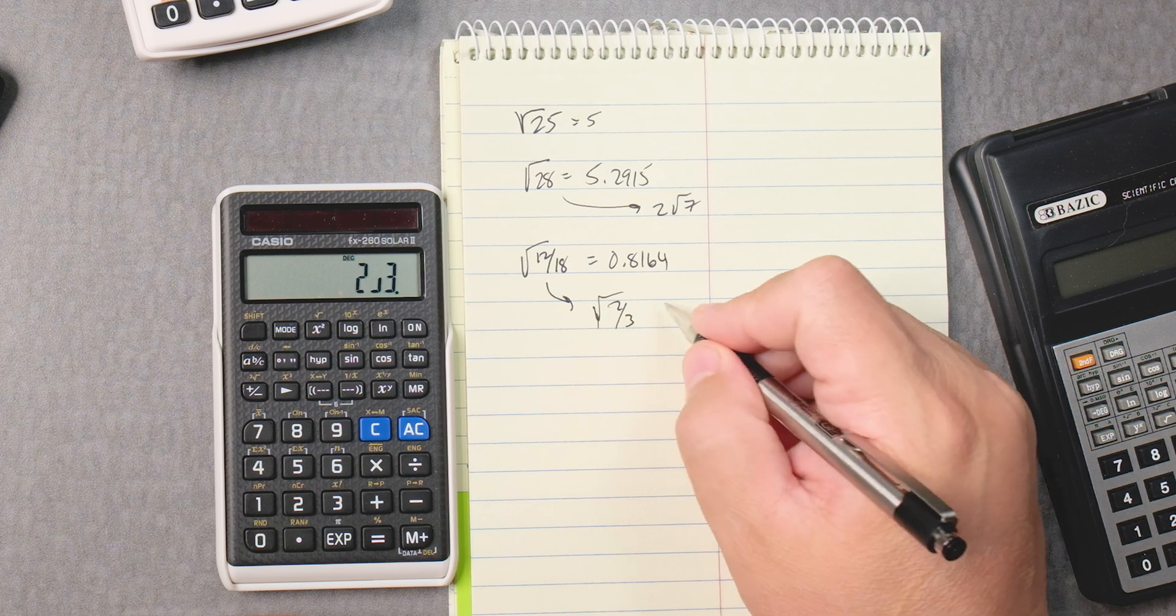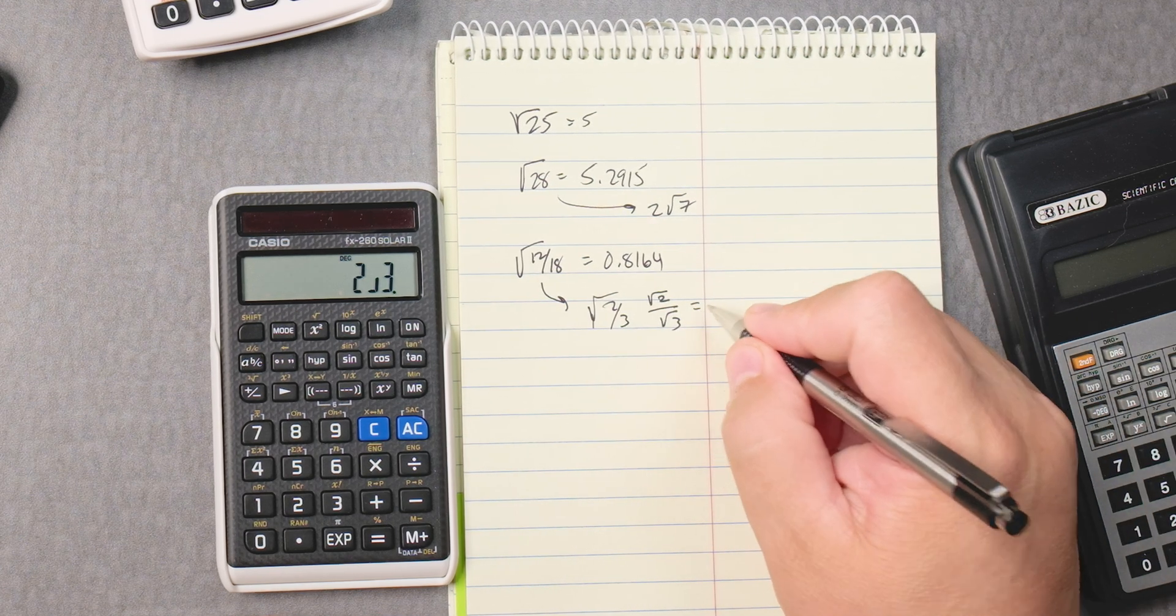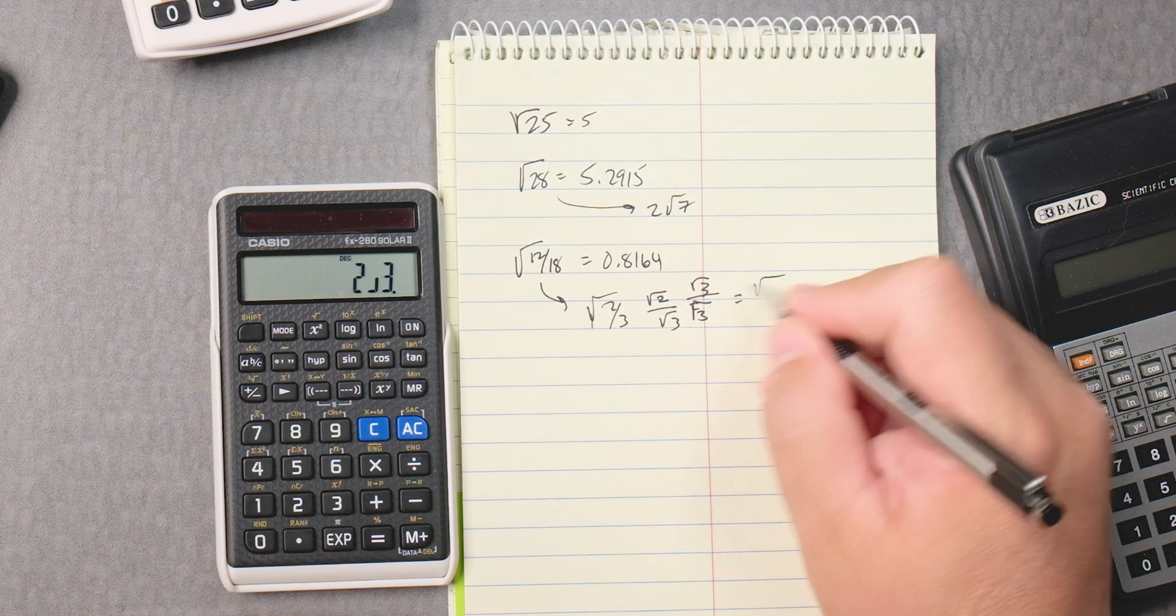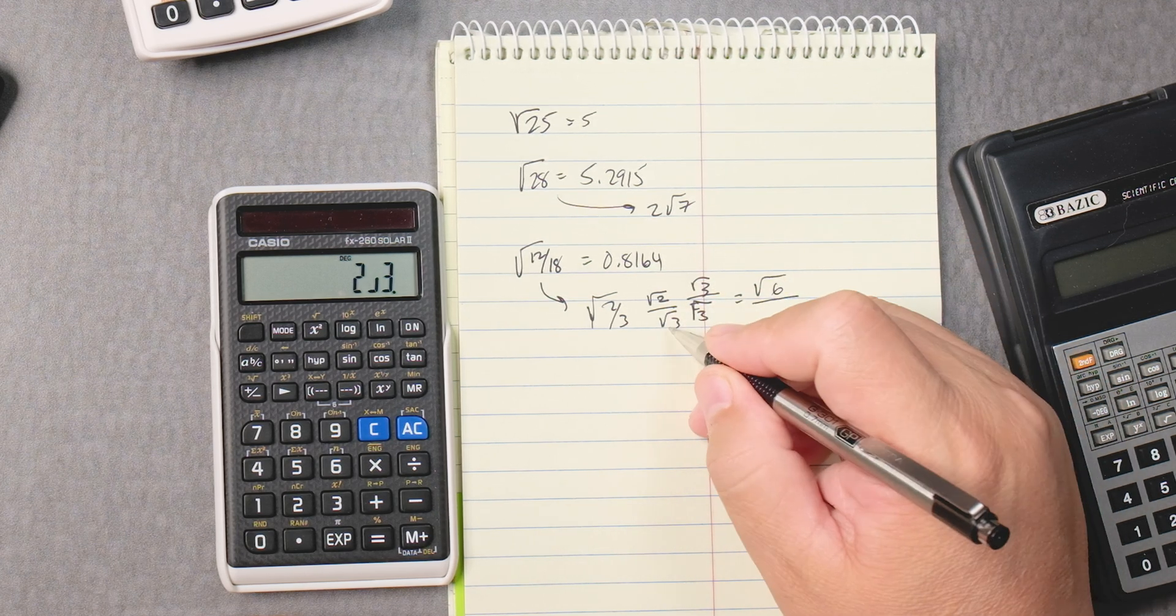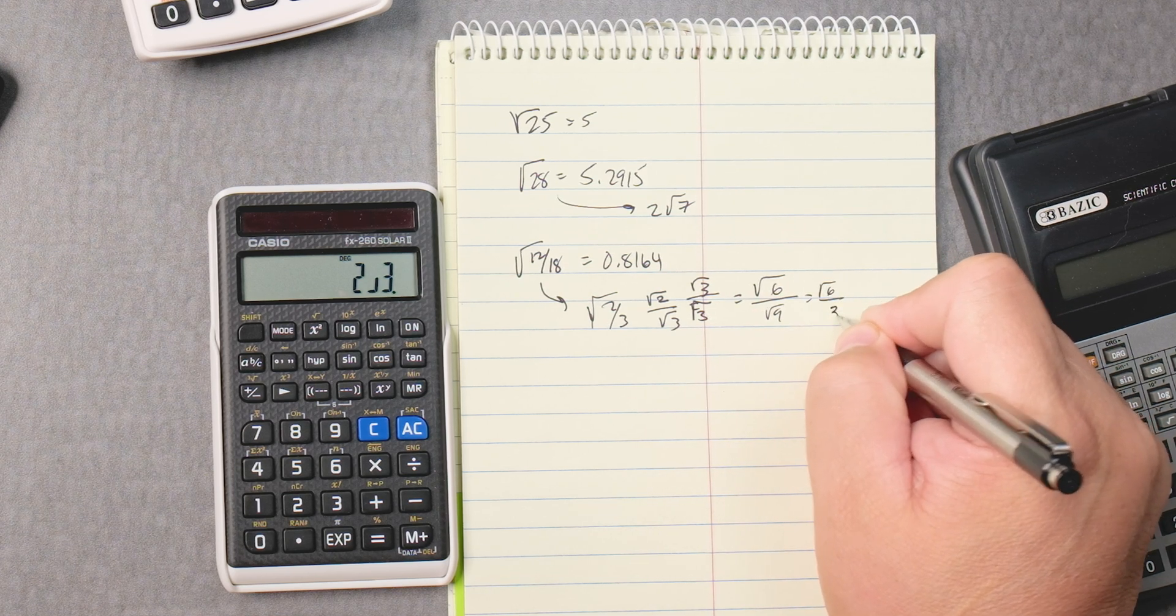And then you can do this by hand. Square root of 2 divided by square root of 3. You can't have radicals in the bottom. Rationalize it. 2 times 3 is 6. 3 times 3 is 9. Square root of 6 over 3.